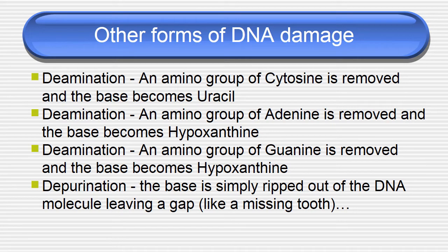Other forms of DNA damage include deamination. Here an amino group of cytosine is removed and the base becomes uracil. In another form, the amino group of adenine is removed and the base becomes hypoxanthine. An amino group of guanine is also removed, and that too becomes hypoxanthine. The base can be simply ripped out of the DNA molecule, leaving a gap like a missing tooth. All of these deamination processes cause DNA damage.